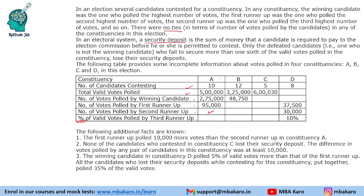None of the candidates who contested in constituency C lost their security deposit. There are five candidates in C. The difference in votes polled by any pair of candidates was at least 10,000. So let us say the lowest candidate is getting X votes. Then the next should get at least X plus 10,000, then X plus 20,000, and so on.